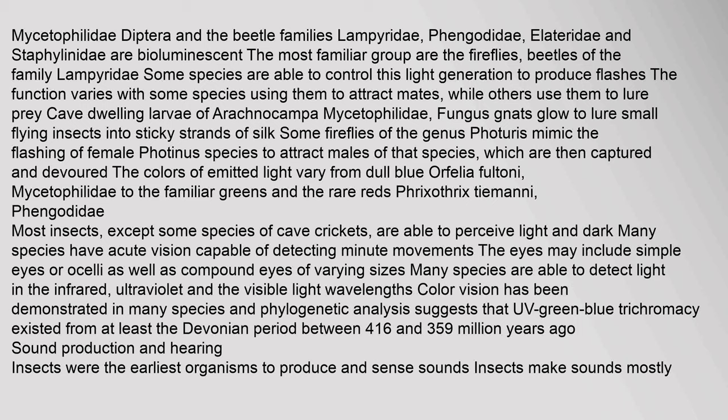The function of bioluminescence varies — some species use it to attract mates while others use it to lure prey. Cave-dwelling larvae of Arachnocampa glow to lure small flying insects into sticky strands of silk. Some fireflies of the genus Photuris mimic the flashing of female Photinus species to attract males, which are then captured and devoured. Colors of emitted light vary from dull blue to the familiar greens and the rare reds. Most insects, except some species of cave crickets, are able to perceive light and dark, and many species have acute vision capable of detecting minute movements.